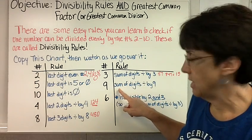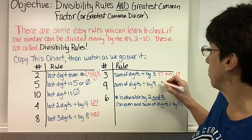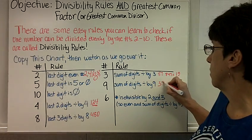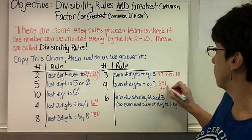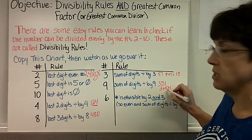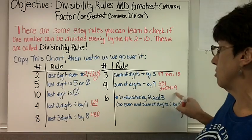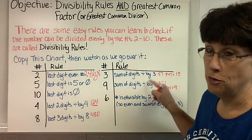The rule for 9 is the same thing, but it's the sum of the digits is divisible by 9. So if I have the number 351, we do 3 plus 5 plus 1. 3 plus 5 is 8, plus 1 is 9. 9 goes into 9, so 9 also goes into 351. Those are pretty cool, I think.